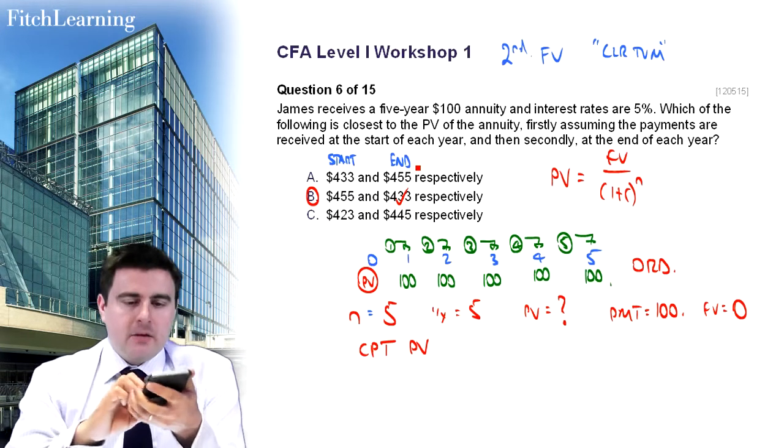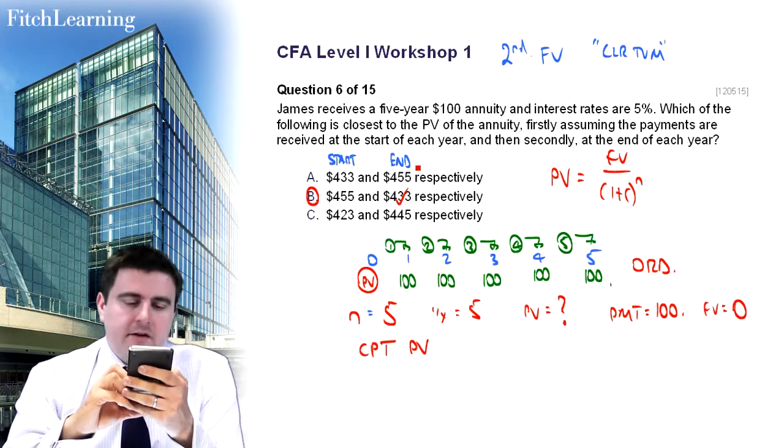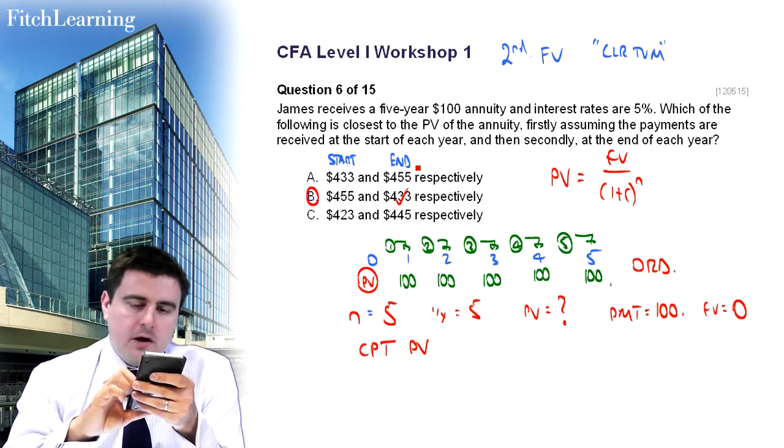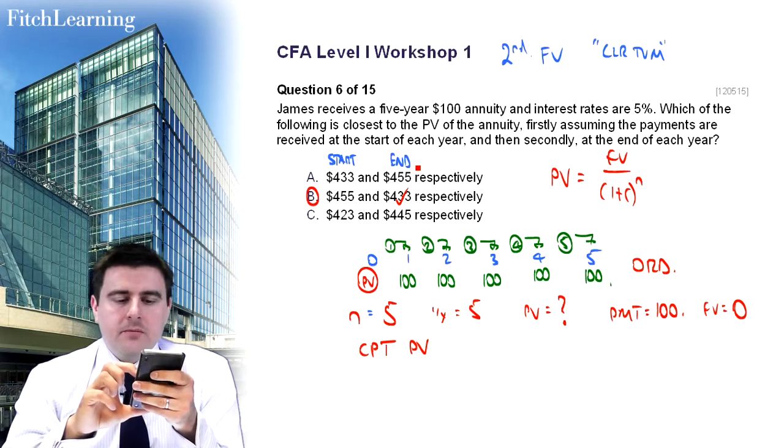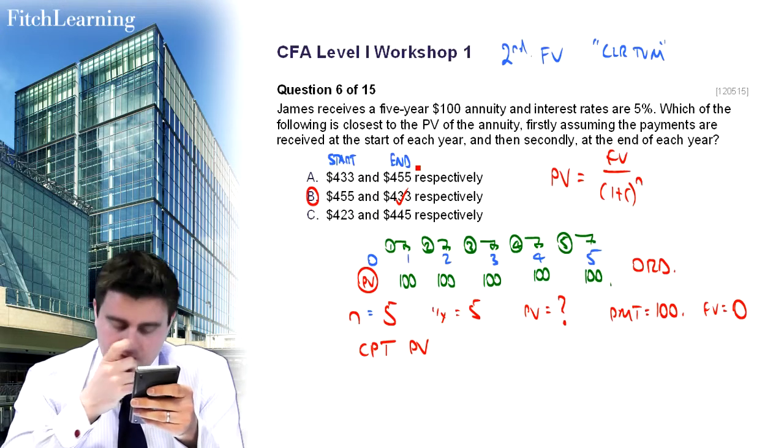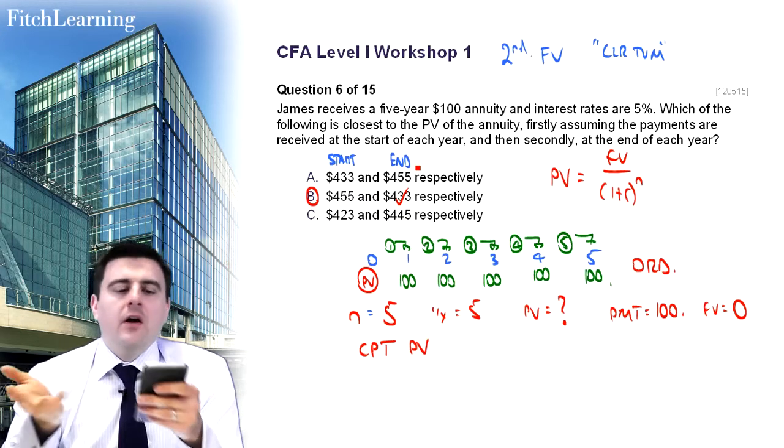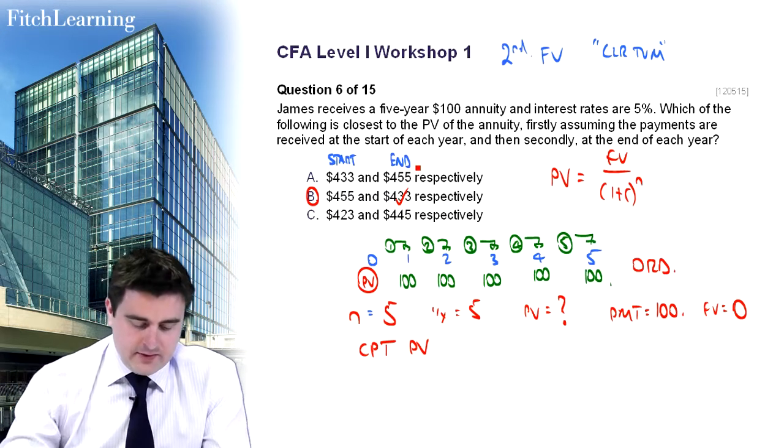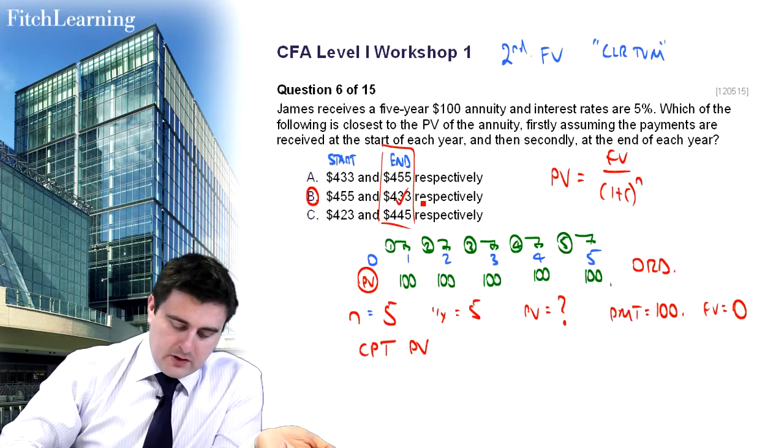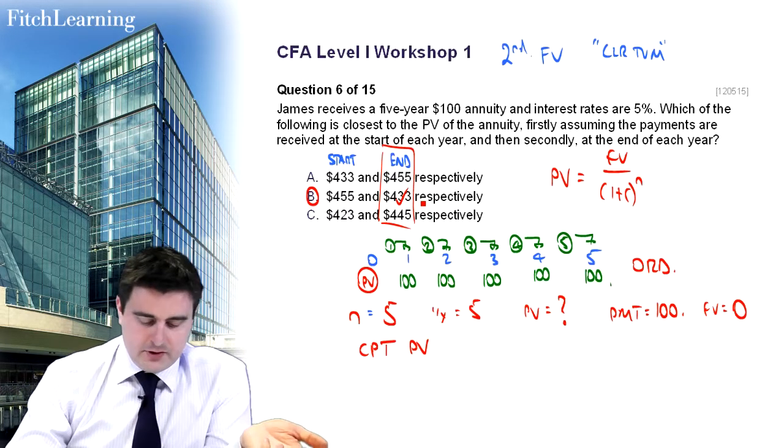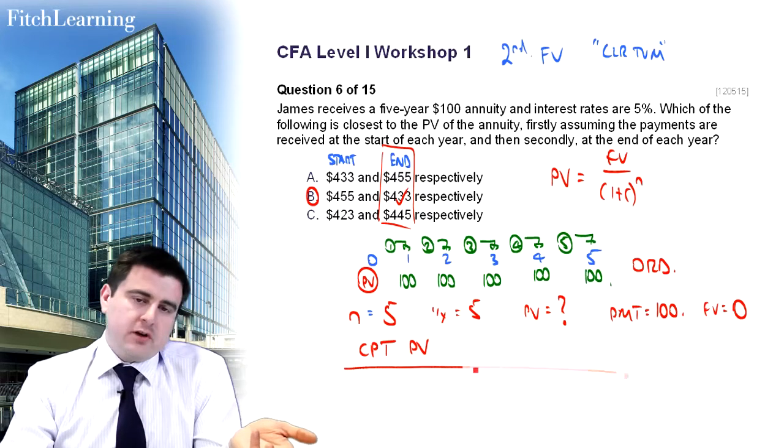So just checking that on my calculator, 5 is my N, 5 IY, 100 is the payment, zero, future value, compute PV, and we've got 432.95, and that's obviously 433. So that has allowed us straight away, given that we've got at the end of the period assumption there, to work out the answer is B straight away.